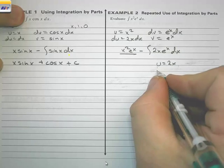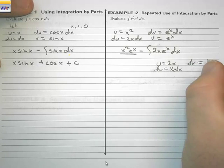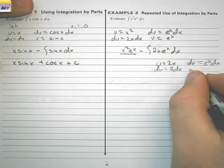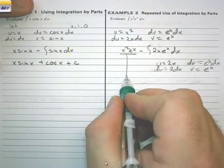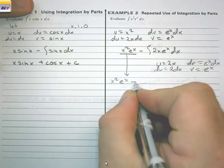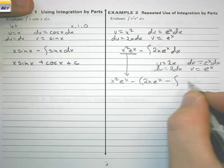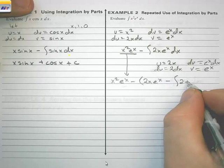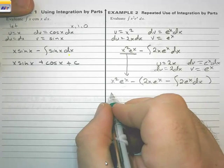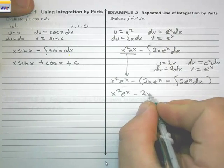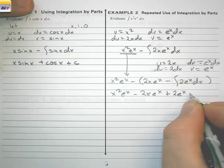We let u equal 2x, so du equals 2 dx, and dv equals eˣ dx, giving v equals eˣ. Bringing everything together, we have x²eˣ minus the quantity 2x·eˣ minus the integral of 2·eˣ dx. Now we have something we can integrate. So the result is x²eˣ minus 2x·eˣ, and running the negative through gives plus 2eˣ, plus C.